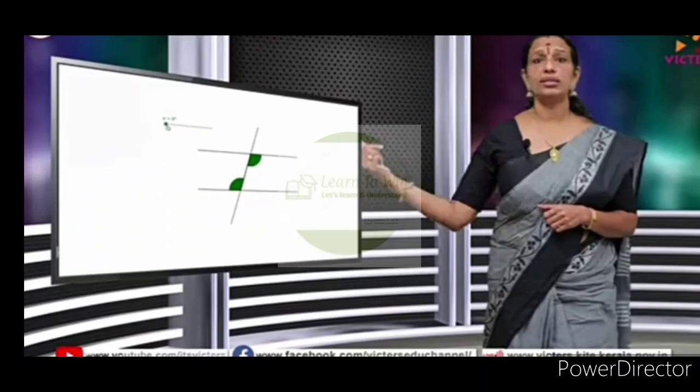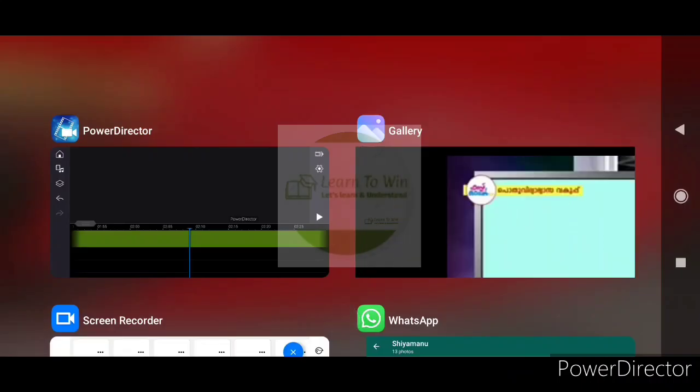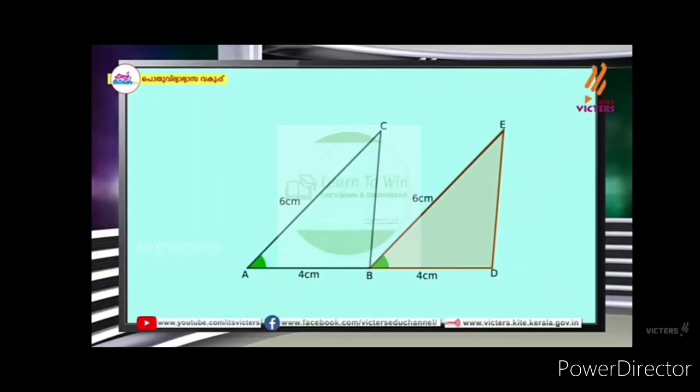We will learn about the same angles. The problem: the two triangles are A, B, C and B, D, E.